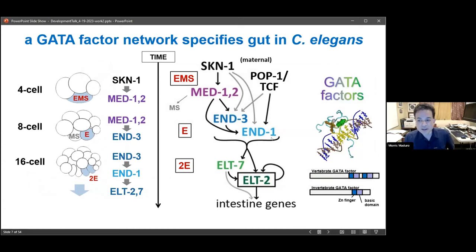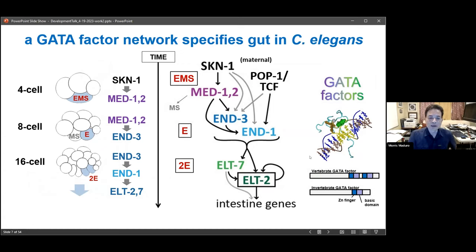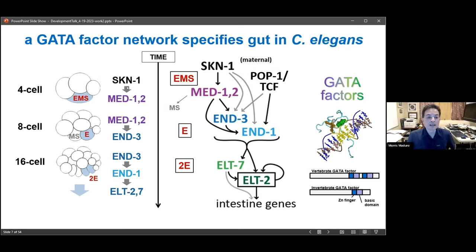For some 20 years, we and others have studied the gene network that causes E to be specified. It turns out to be the result of a cascade of structurally similar GATA factor proteins. GATA factors consist of a zinc finger and associated basic domain that interact with sequences having GATA at their core. The C. elegans network is initiated by maternal gene SKN-1, an NRF-related bZIP homeodomain factor, which initiates expression of zygotic regulators MED1-2 at the four-cell stage, contributing to specification of E through activation of END-3, END-1.